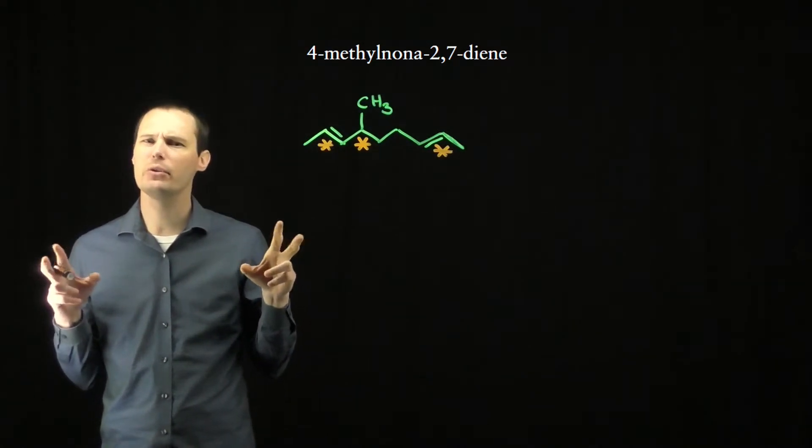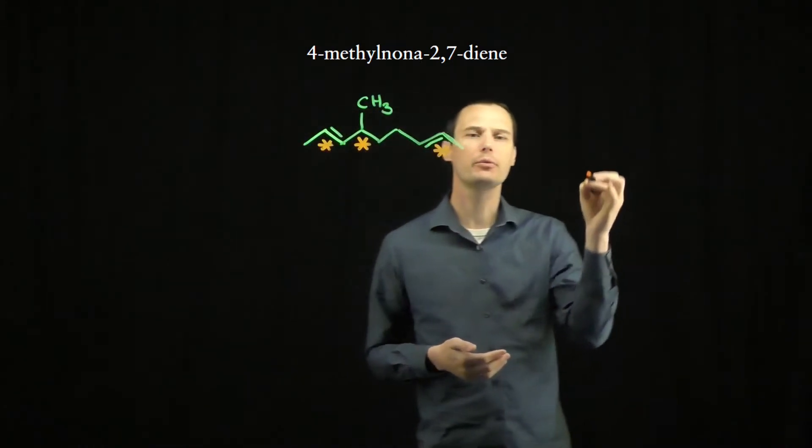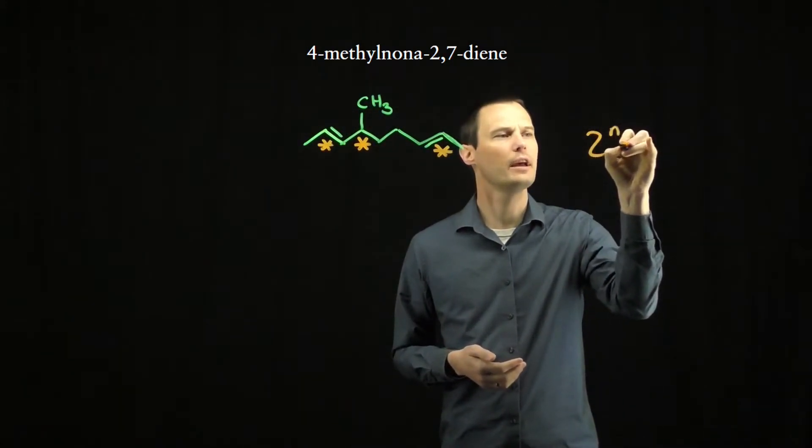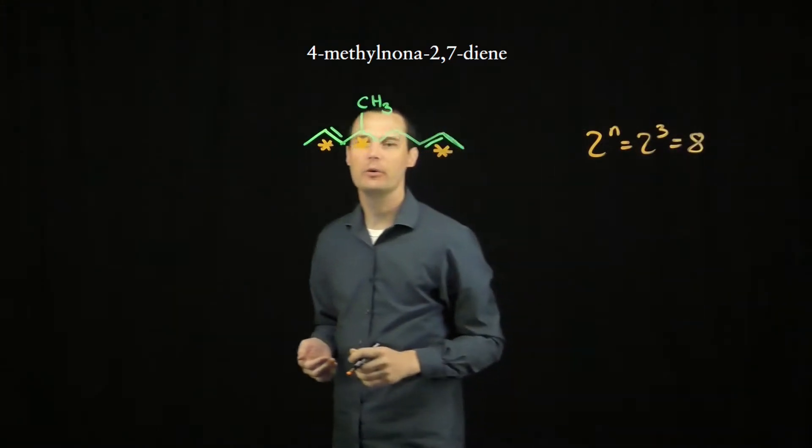Meaning there are three stereounits in the molecule. If we apply our formula with three stereounits, 2 to the n, 2 to the 3rd, that means there should be eight possible stereoisomers.